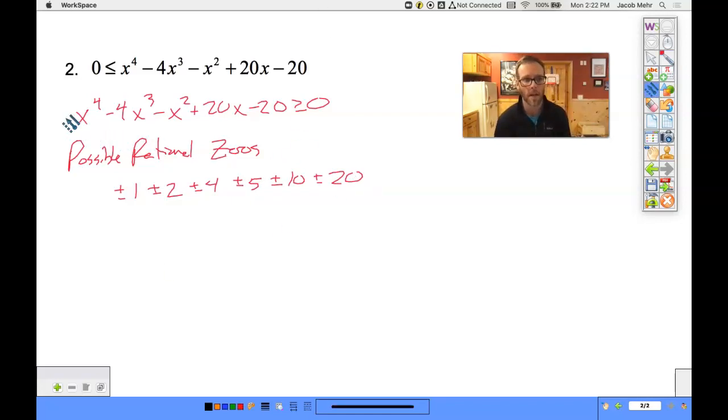Taking a look at my sign changes. There's 1, 2, 3 sign changes. So 3 or 1 positive real zeros.